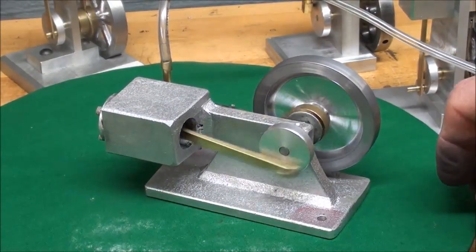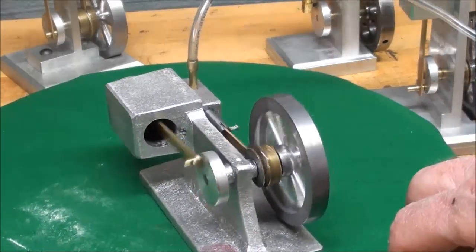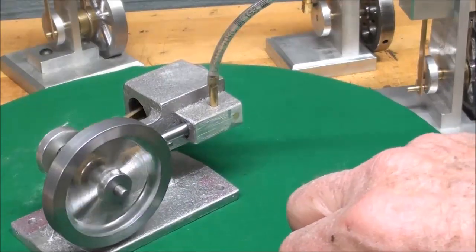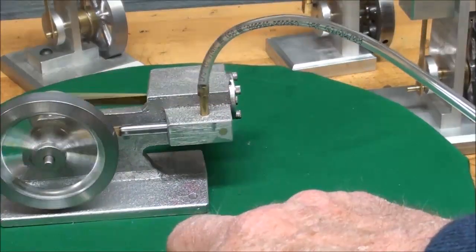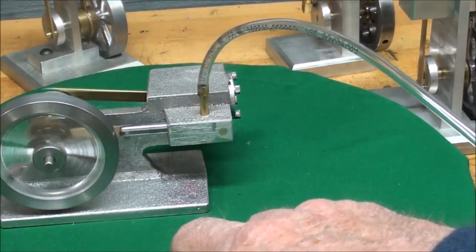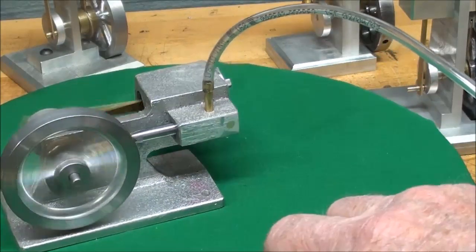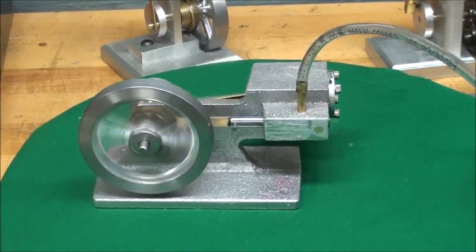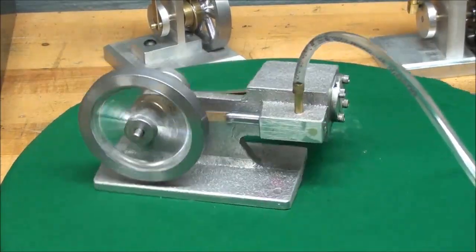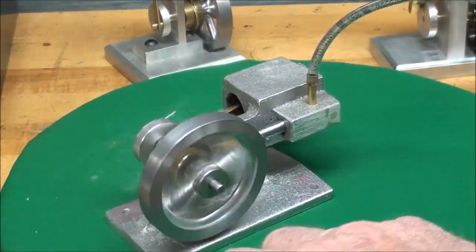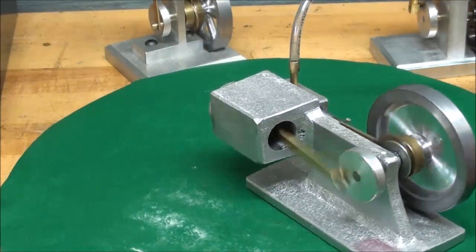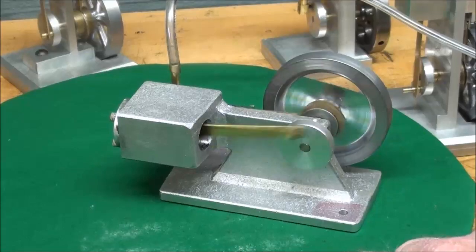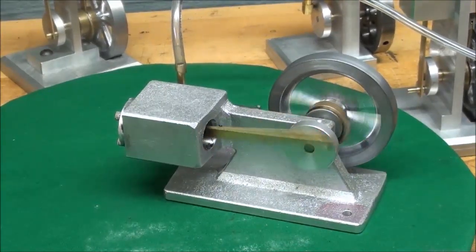These little engines always run real well. They're pretty much bulletproof. If you don't have any binding, they will not tolerate any tight spots or binding. This is running on about 5 PSI. Single acting. This could be made into a double acting. It's always more complicated and finicky. A little harder to build. And I may do that in a future episode.